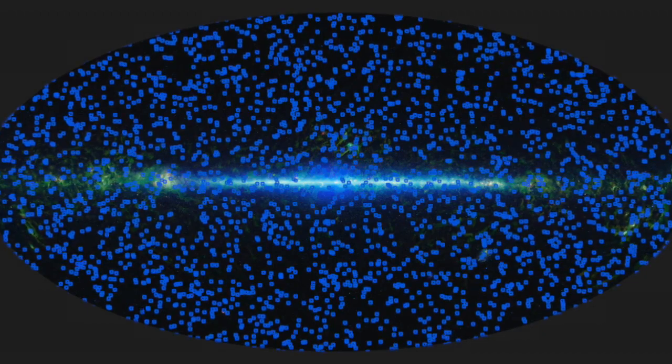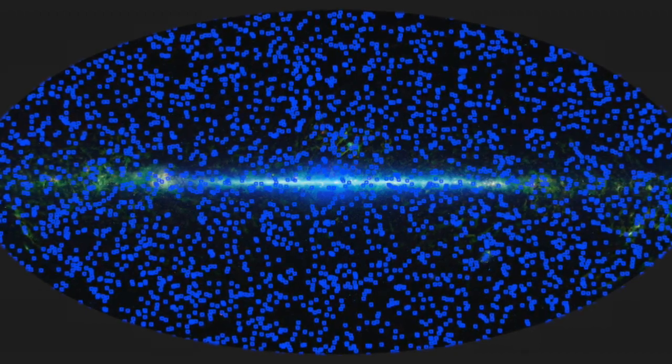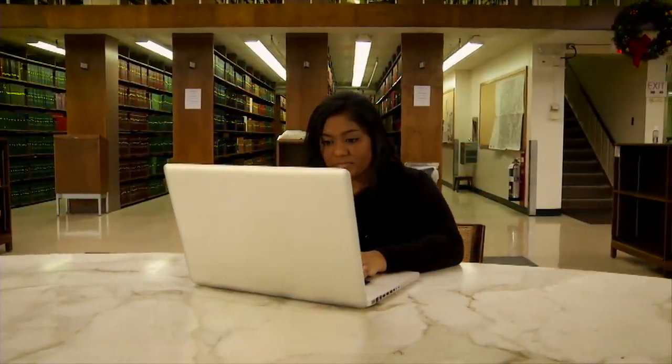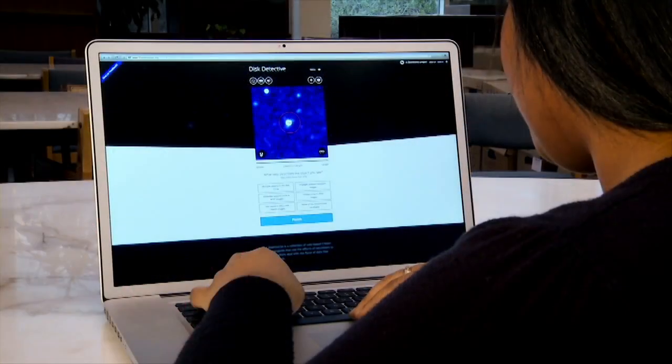Single WFIRST images will contain over a million galaxies. And we can't categorize and catalog those galaxies ourselves. Citizen Science allows interested people in the general public to solve scientific problems. And so one of the things that I'm really excited about is enabling this bridge where the general public can get involved in doing actual science.